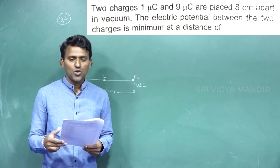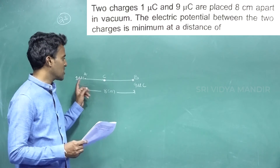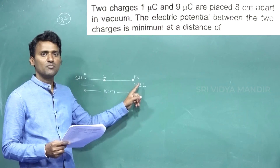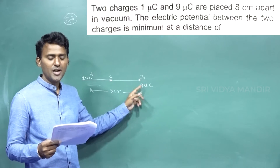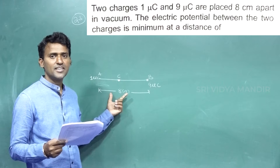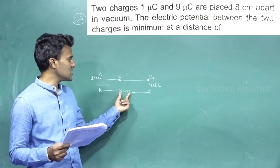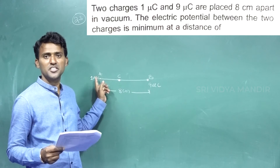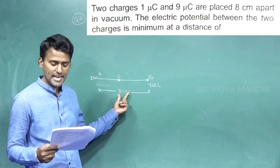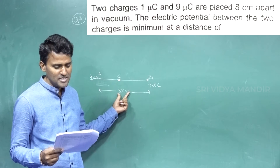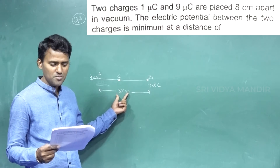Two charges, 1 micro coulomb and 9 micro coulomb, are placed 8 centimetres apart. These two are separated by a distance of 8 centimetres in vacuum.